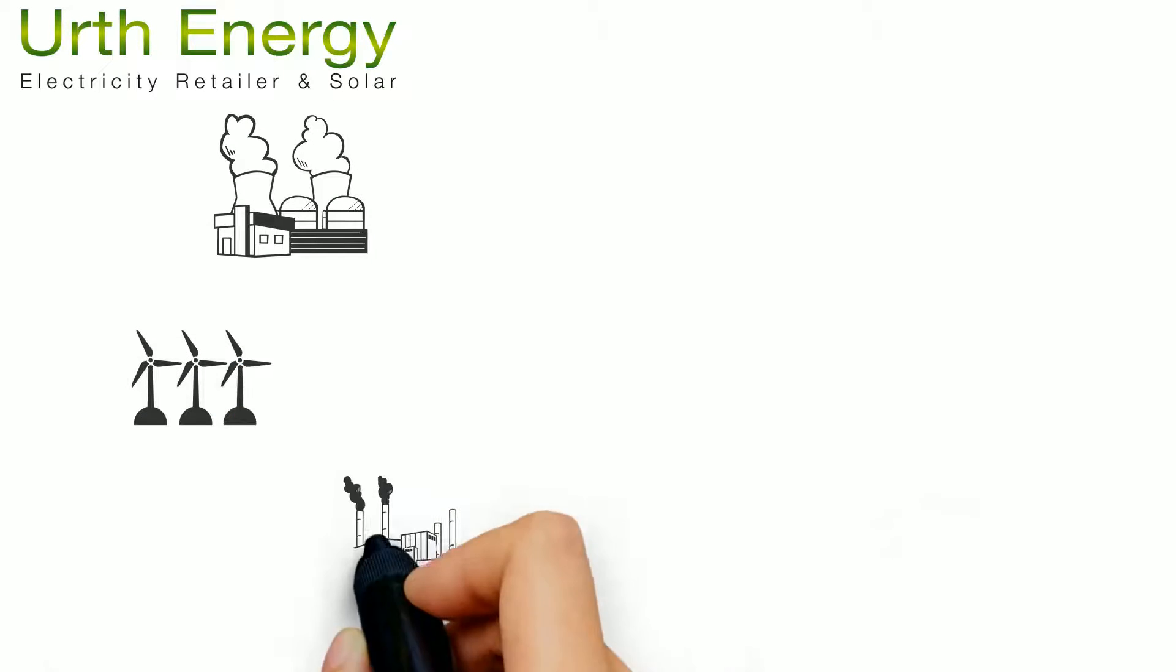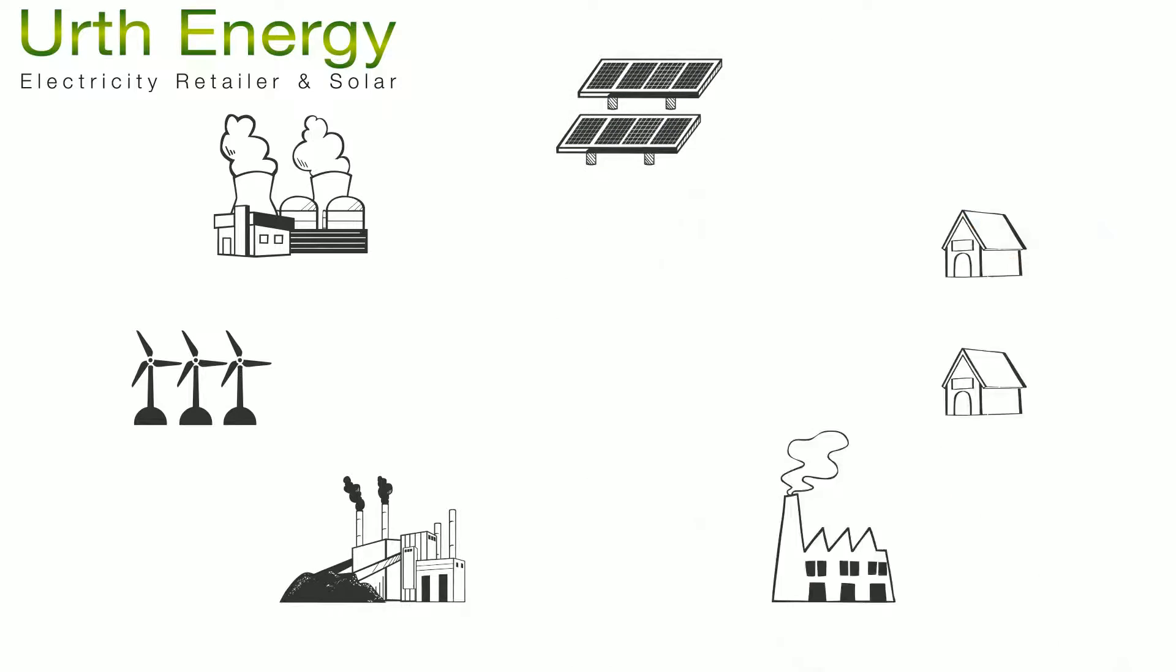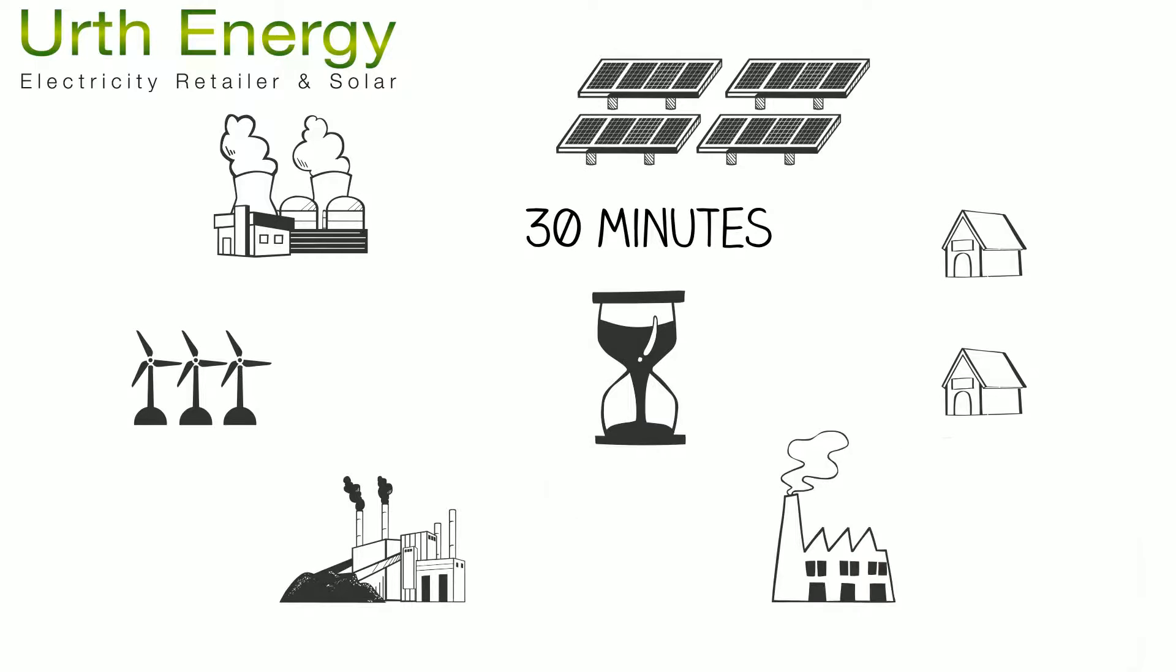The national electricity market is a complex and dynamic place, so let's just take a look at some of the basics. Prices are settled every 30 minutes. This is known as the spot price.